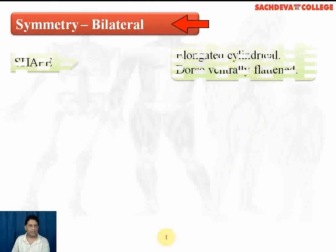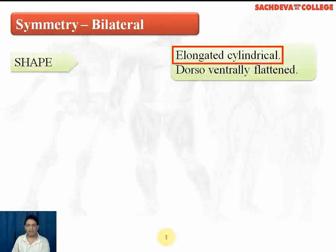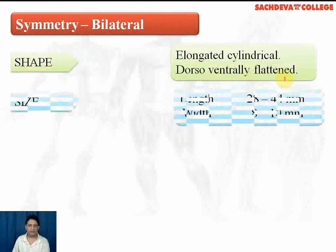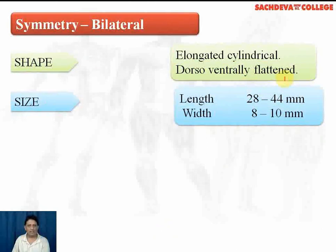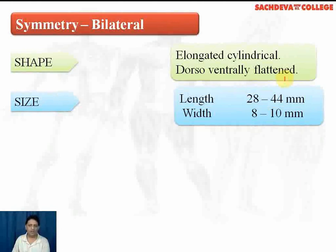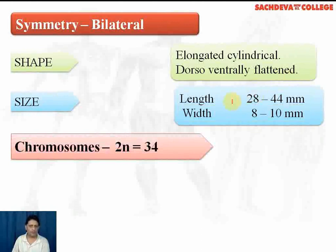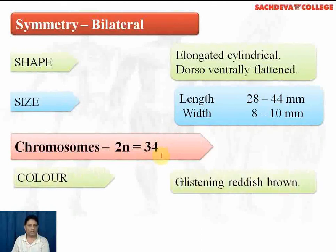Symmetry: the cockroach is bilaterally symmetrical. The body is elongated and cylindrical in shape, and somewhat dorsoventrally flat. Size: the length varies from 28 to 44 mm and the width varies from 8 to 10 mm. The chromosome number 2n is equal to 34. Color: it is glistening reddish brown.